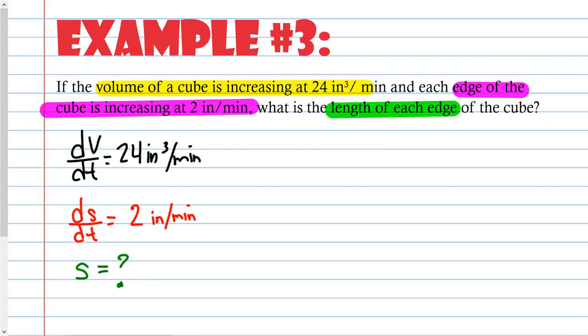I have the derivative of s, I need to find s, and I have the derivative of V. So what equation should I use? If I have the derivative of volume, I must have gotten that from somewhere — preferably volume — so maybe I should use that. In the previous examples, the thing we were looking for was the derivative of the equation. In this example I'm not looking for the derivative, I'm looking for s, but I have the derivative of volume, so I'll use volume. V = s³. Derive it: dV/dt = 3s² · ds/dt.